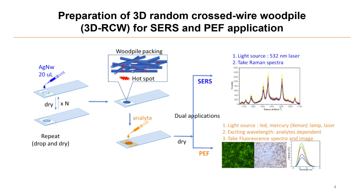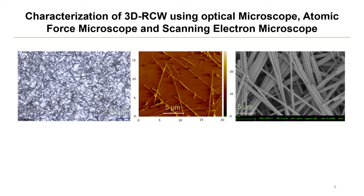We sprinkle a specific amount of synthesized nanowires onto a glass slide and let it dry. The sprinkle-and-dry steps are repeated until an upright-pile packing is formed, creating a three-dimensional random cross-wire upright-pile nanostructure. This nanostructure can have many 3D hotspots which enhance Raman scattering originating from the probe molecules. We characterize the 3D RCW nanostructure using optical microscopy, AFM, and SEM. The upright-pile nanostructure has many intersection points for hotspot generation.